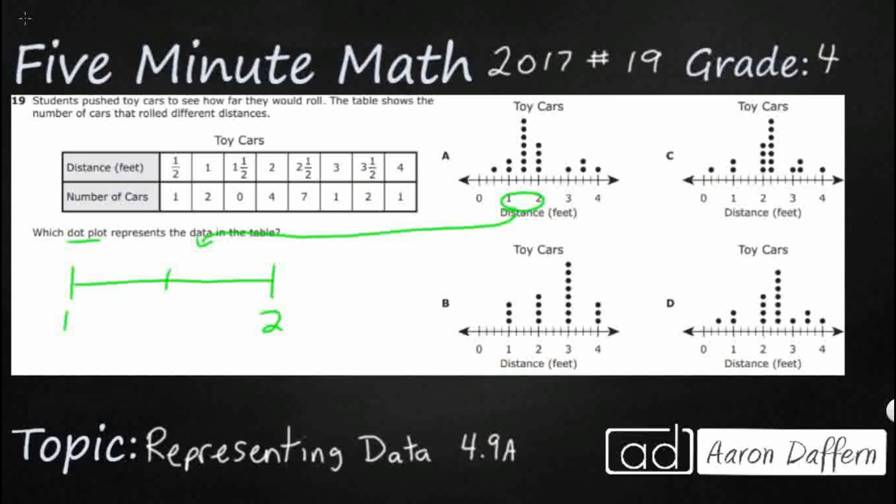And you notice we've got three hash marks in between one and two and they're not labeled at all, but we're going to need to be able to quickly label these. So if we've got three hash marks that means we've got four spaces, right? One, two, three, four.